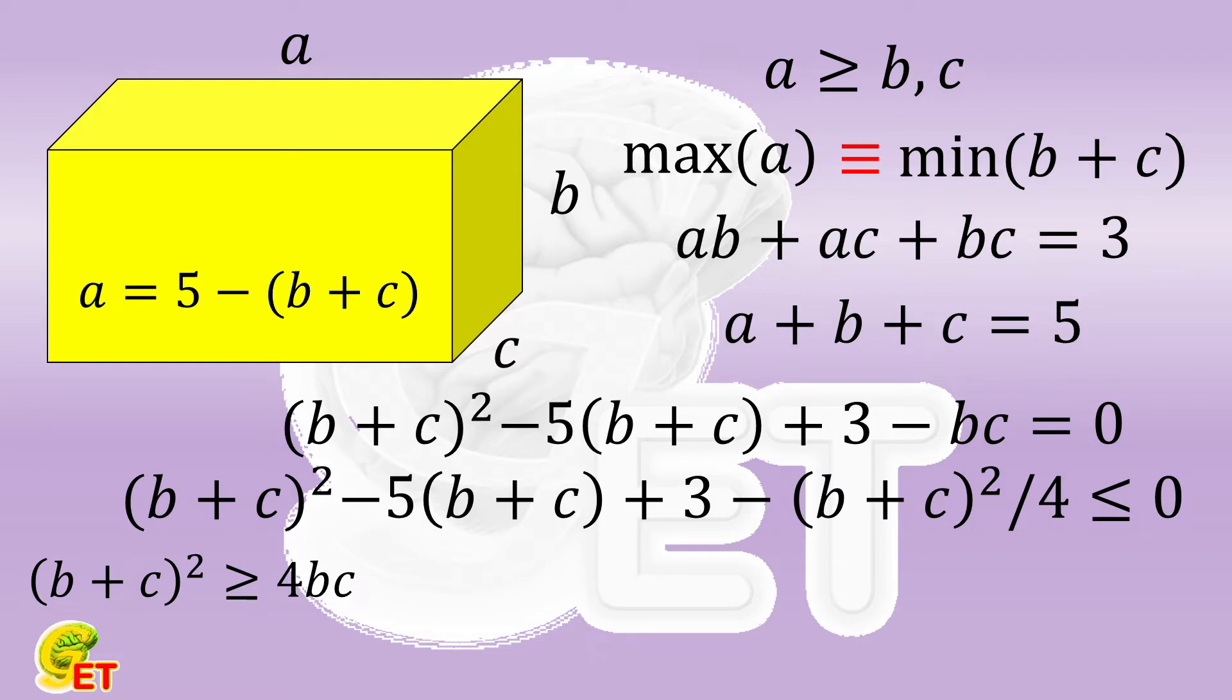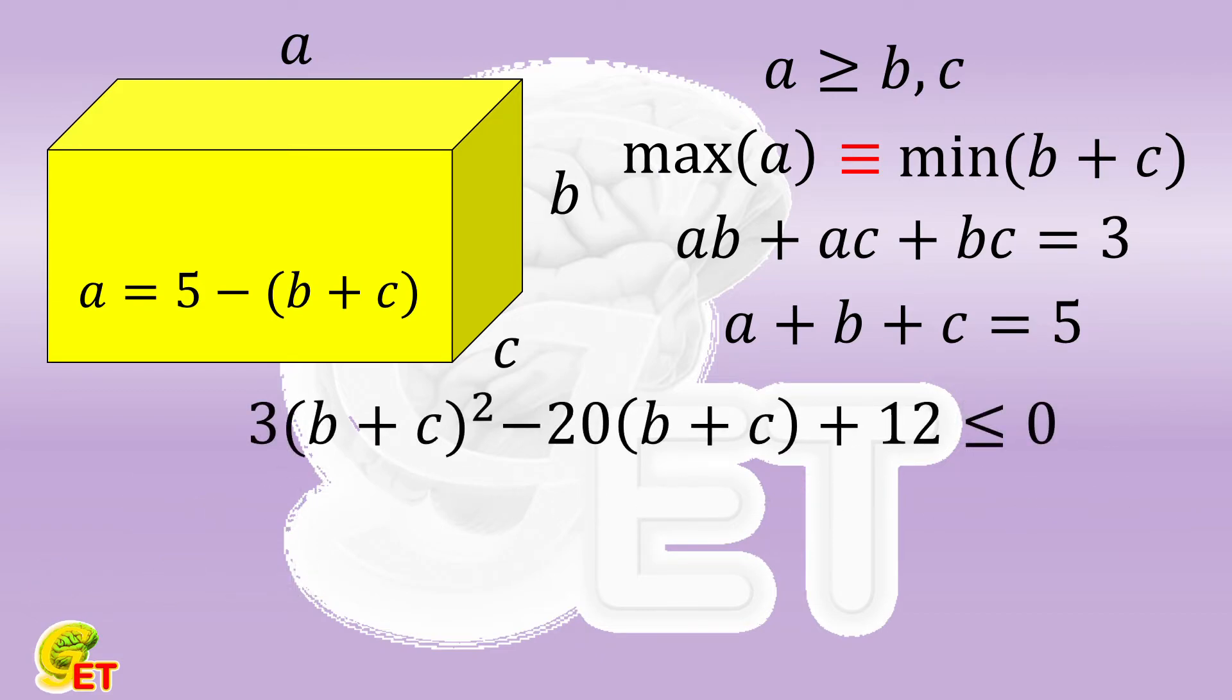Tidy it up again, 3 times the square of B plus C minus 20 times B plus C plus 12 is not bigger than 0. This is a standard quadratic inequality in one variable, and it is easy to calculate that the range of the solution is B plus C is between 2 thirds and 6.